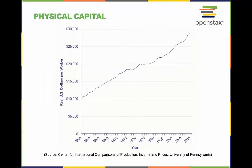The value of physical capital — measured by plant and equipment used by the average worker in the U.S. economy — has risen over the decades. The increase may have leveled off a bit in the 1970s and 1980s, which were not coincidentally times of slower than usual growth in worker productivity. We see a renewed increase in physical capital per worker in the late 1990s, followed by a flattening in the early 2000s.